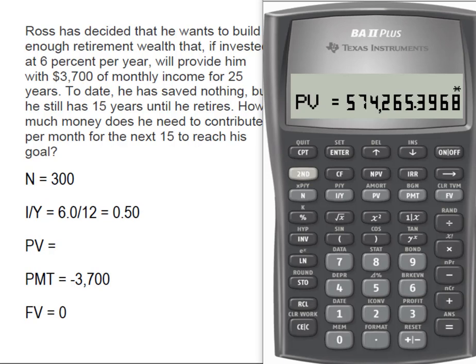Now remember he saved nothing. So the question becomes, how much does he need to put away every month for the next 15 years in order to have that $574,000 in the bank?